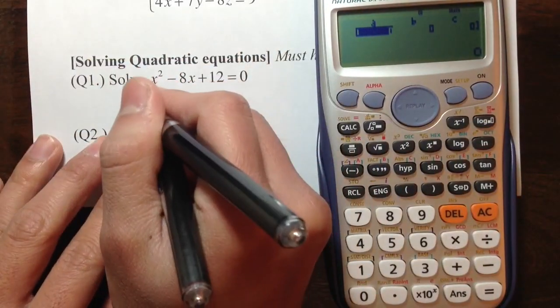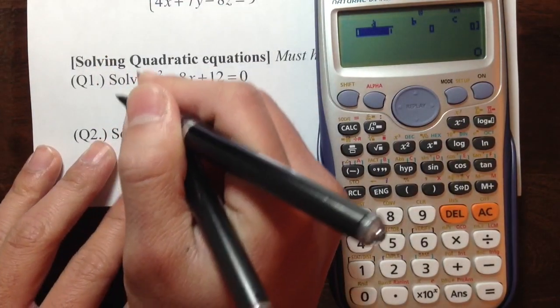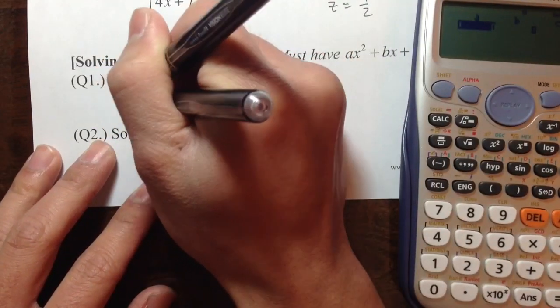It's in standard form. Let me write this down. Since we have x², right here technically we have 1x². So a = 1.